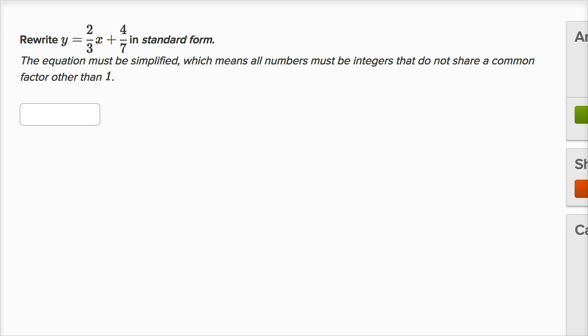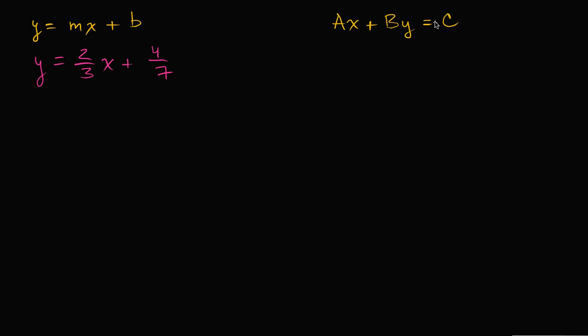That just means that A, B, and C in standard form need to be integers, and they want them to not have any common factors. So if we got it to the point of, say, 4x plus 2y equals 10, well, these numbers are all divisible by 2. They all have the common factor of 2, so we would want to simplify it more.